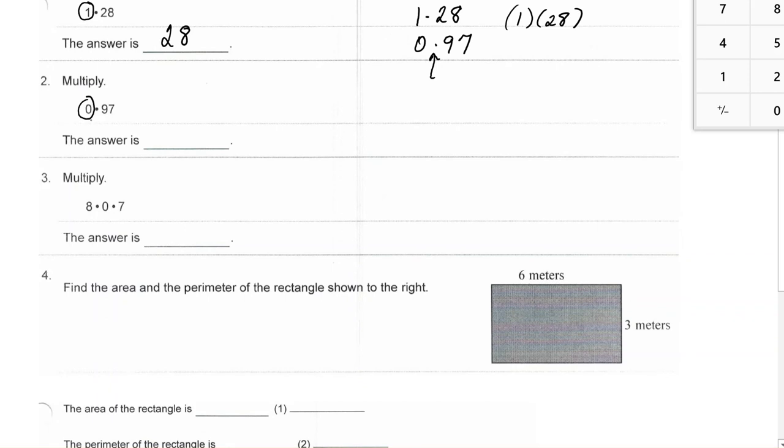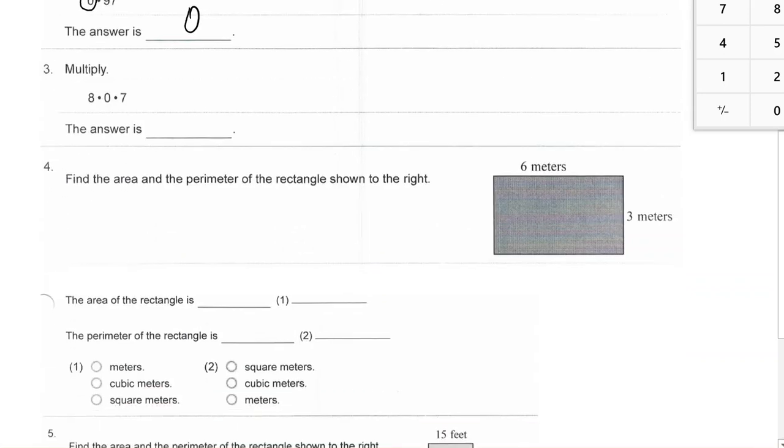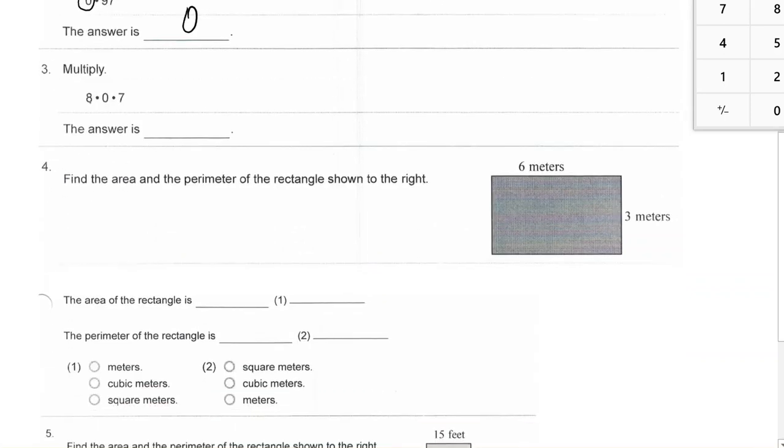So back to number two. 0 times anything is 0. Number three. I have 8 times 0 times 7. Well, you can just move left to right. 8 times 0 is 0. And then 0 times 7 is 0. So that product, and by the way, the answer to a multiplication problem is called a product.